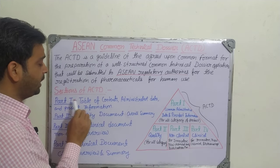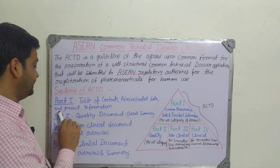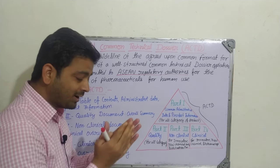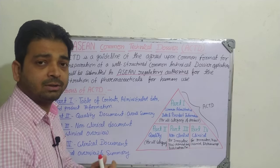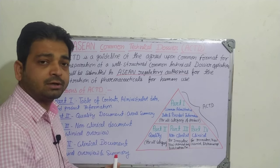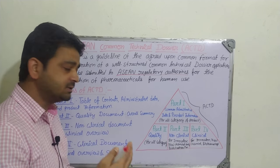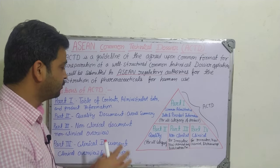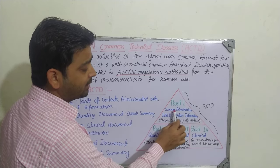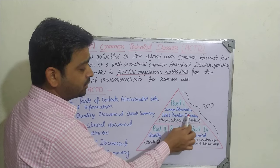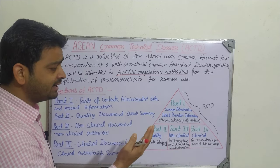Part one is nothing but the table of contents, administrative data, and product information. What are the contents going into the dozer? What are the administrative data available for the particular formulation? About the product — the kind of liquid dosage form, solid dosage form, what binders, excipients have been used — all those product details we are going to have in part one. In the triangle model, it suggests that part one is the common administrative data and product information, and it can be used for all categories of product.